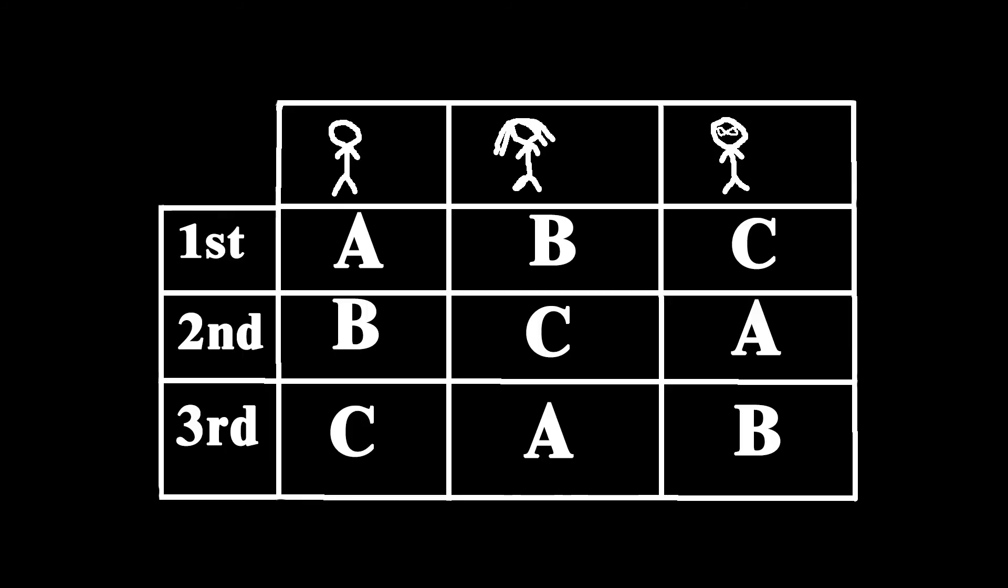Imagine the following ranked ballots. As you can see here, A will beat B, C will beat A, and B will beat C. There is no Condorcet winner.